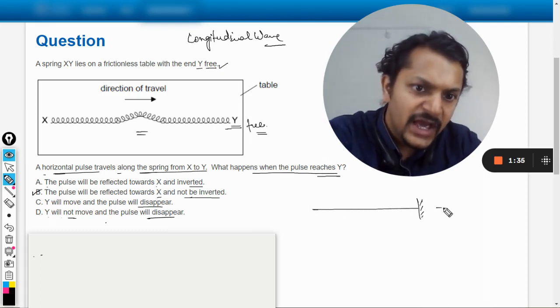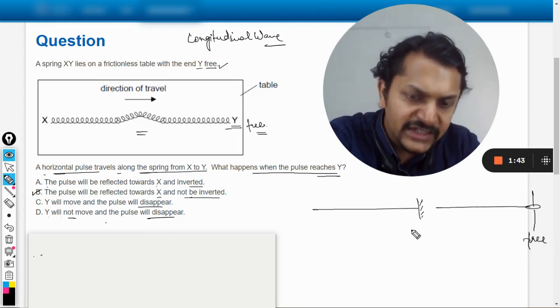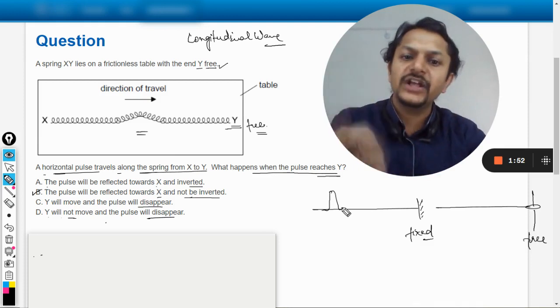This is the fixed end, and this is another case where this is not a fixed end, it is free end. This is how we show free ends, and this is how we show the fixed ends. Okay, so when a pulse here, seeking the help of transverse wave.